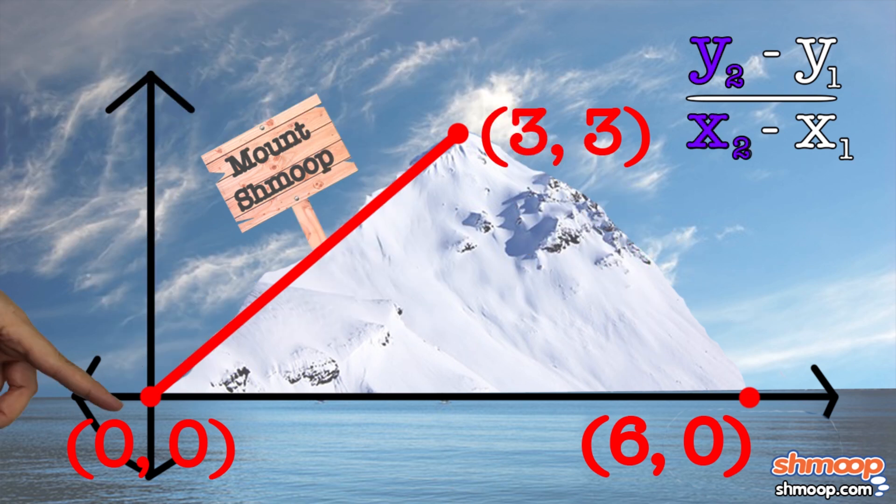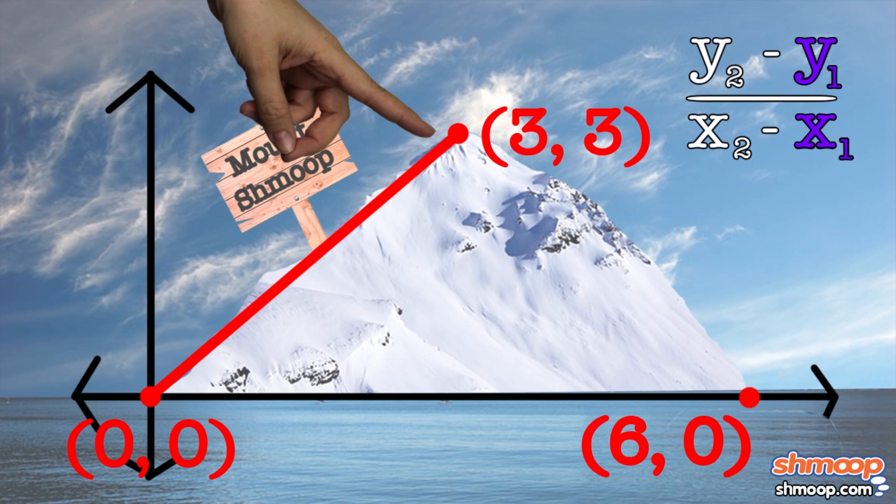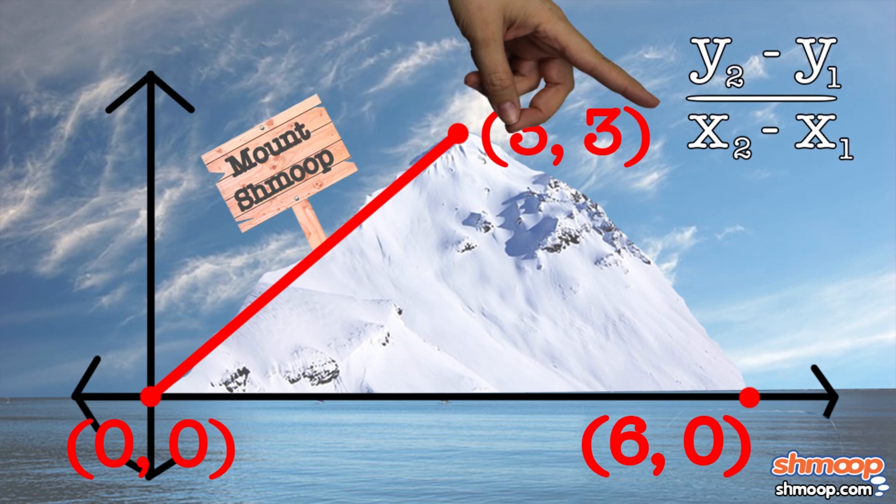But what if we started with this point as the first one, the origin here, and subtracted the peak, which now we'll call the second number? Well, would the slope change? No.